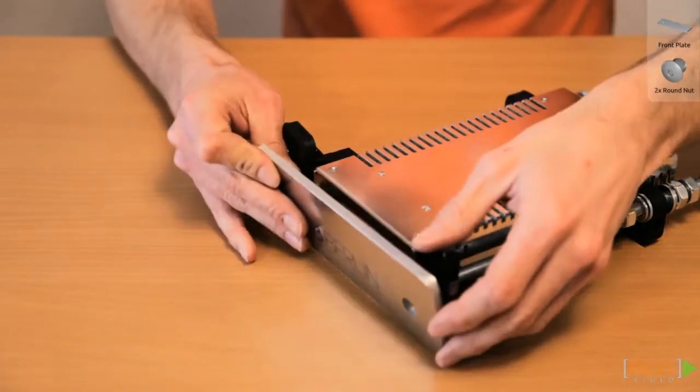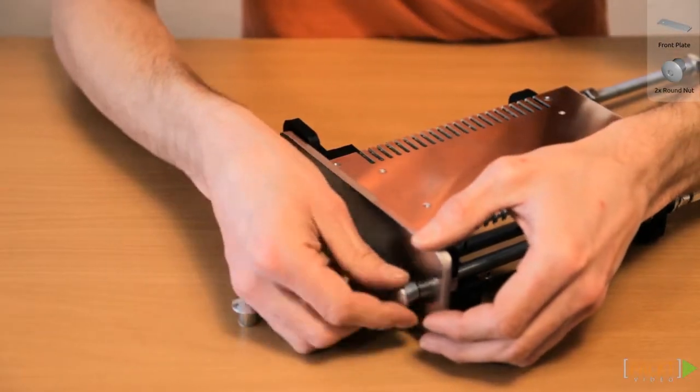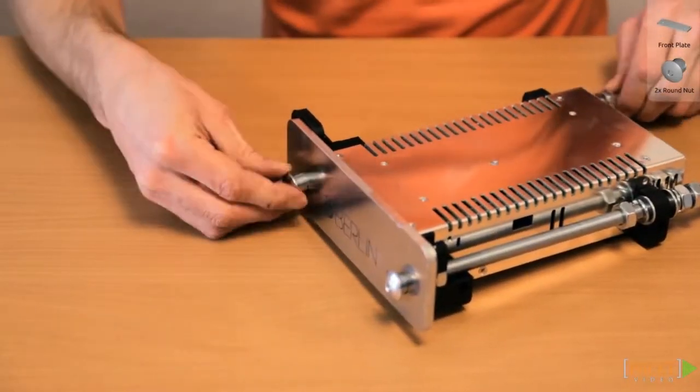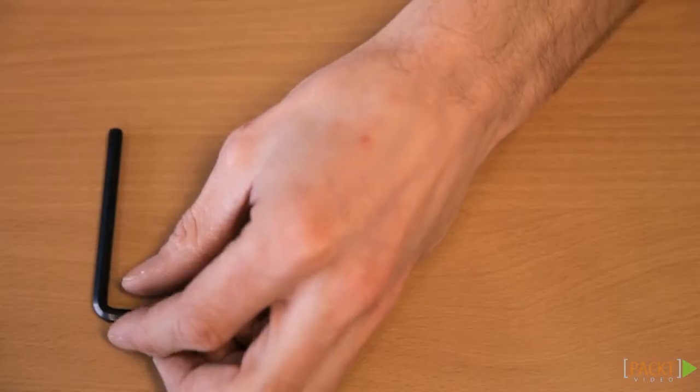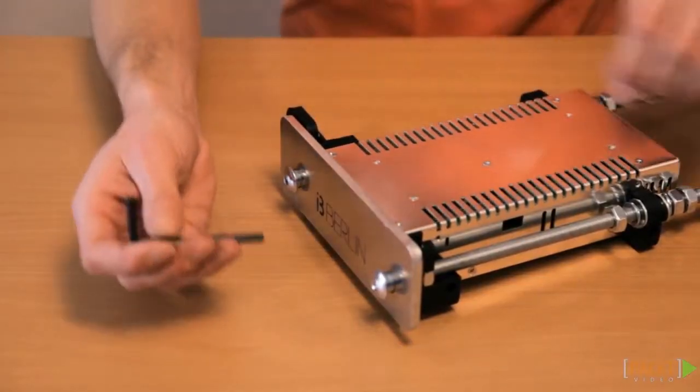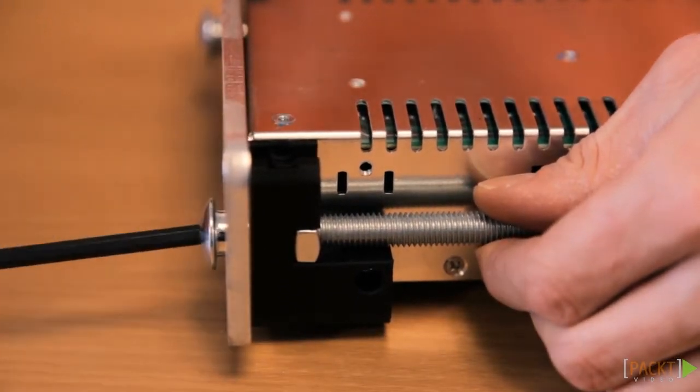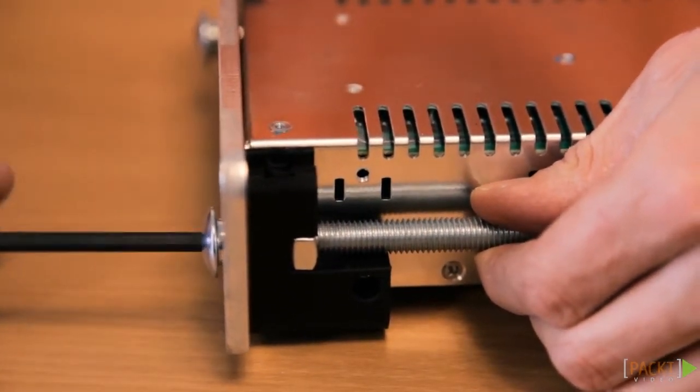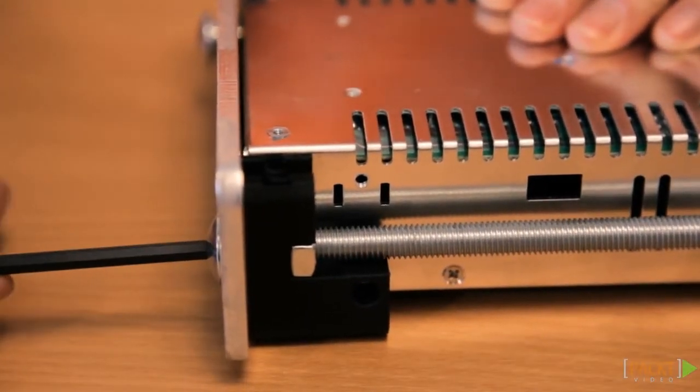Attach the front plate to the rods. Put the round nuts onto the rods. Make sure that there is about 2cm of space on both sides of the power supply holder. Hold the rod with your hand and tighten the nut until you can turn it no further. Tighten the round nuts until the nuts in the plastic part behind the front plate are fully fixed.